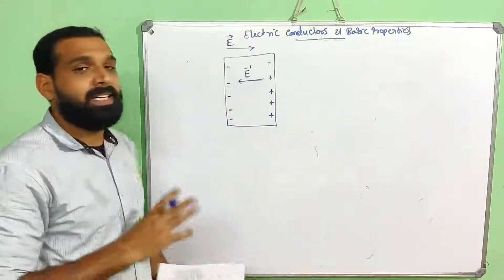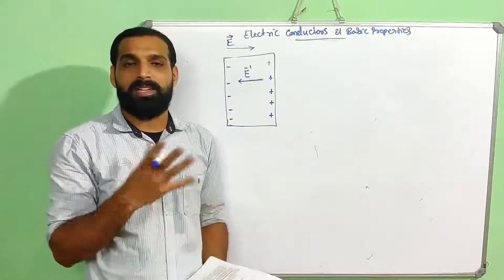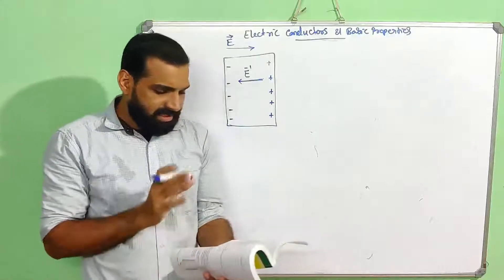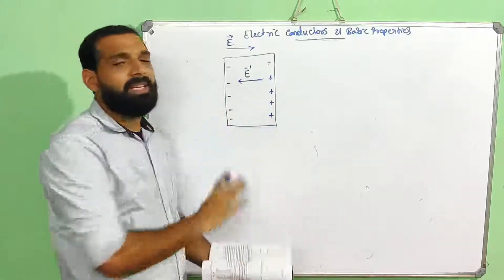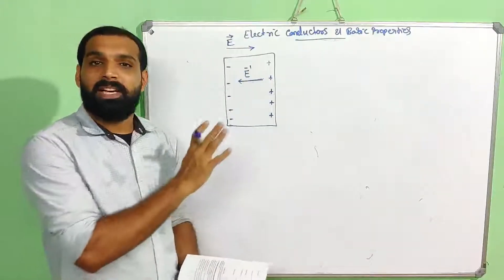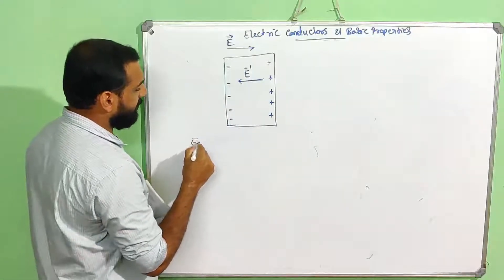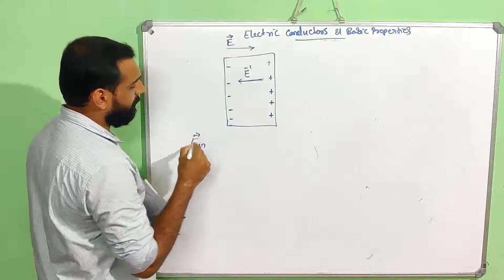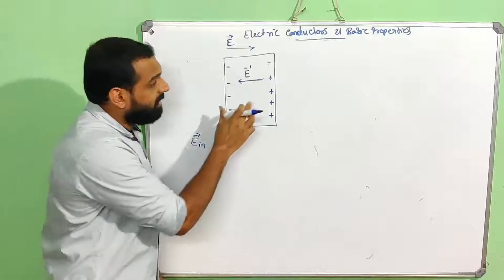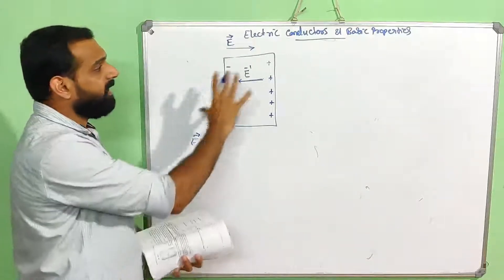Since it's a conductor, it contains a large number of free charge carriers — positive and negative charges. This charge separation will continue until the total electric field inside the conductor becomes zero. The separation continues until the internal electric field cancels the external one.